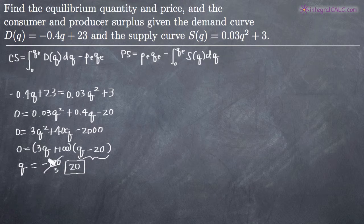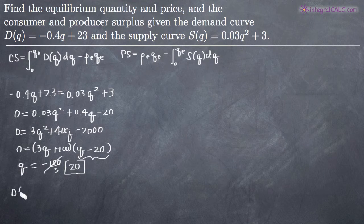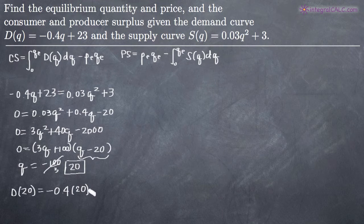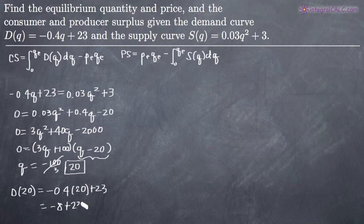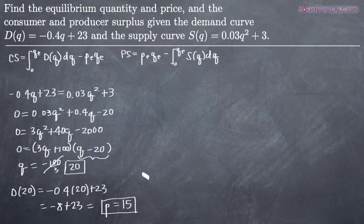Now we can plug q = 20 back into either the demand or supply equation to get the equilibrium price. Plugging into the demand equation: negative 0.4 times 20 plus 23 gives us negative 8 plus 23, which equals 15. So the equilibrium price is 15. Those are our equilibrium quantity and equilibrium price, and now we can go ahead and solve for consumer surplus and producer surplus.